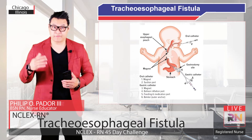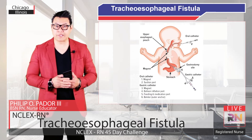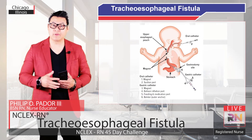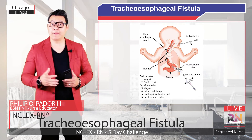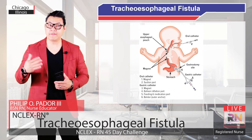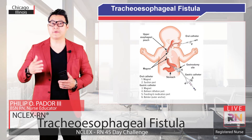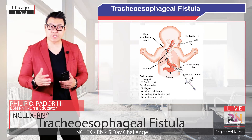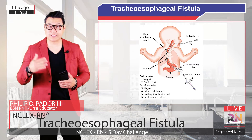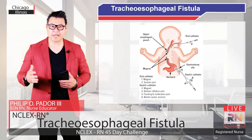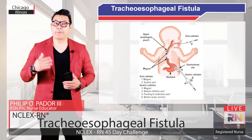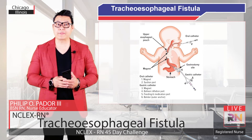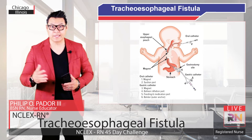Before a tracheoesophageal fistula repair procedure, an intravenous line will be started. The baby may be given antibiotics through the IV to decrease the chance of infection. The baby will be given general anesthesia which will put the baby to sleep for the entire operation. A breathing tube will be inserted through the mouth and down the throat to help the baby breathe during the operation.